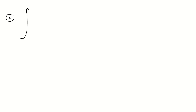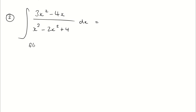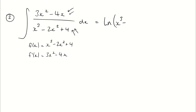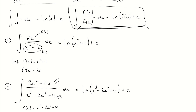Very similarly, let's anti-differentiate (3x² - 4x) divided by (x³ - 2x² + 4) with respect to x. We have a function on the denominator: x³ - 2x² + 4. Its derivative is 3x² - 4x, which is exactly what we see on the numerator. Therefore, by the rule, the answer is the natural log of (x³ - 2x² + 4) plus c.